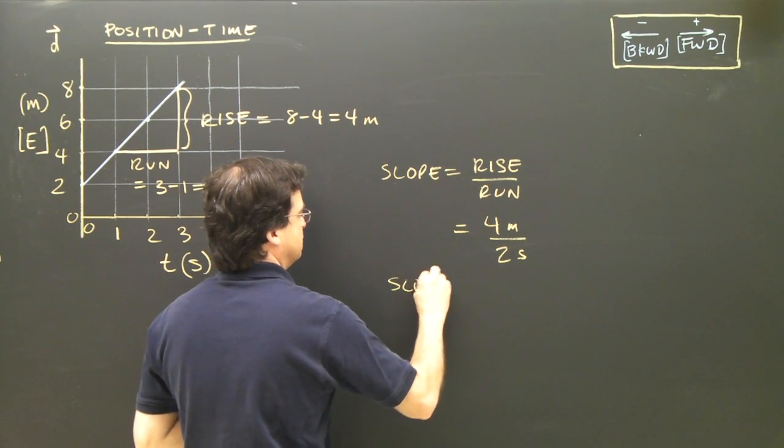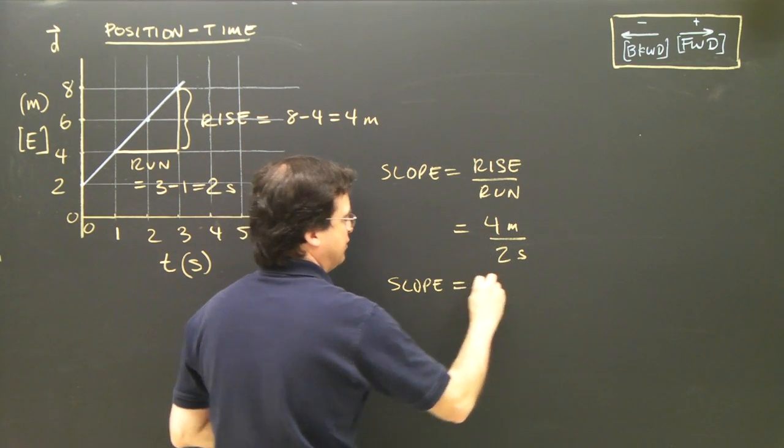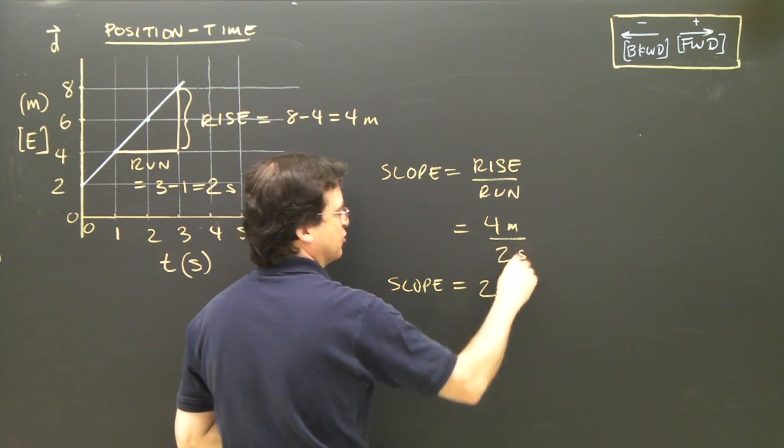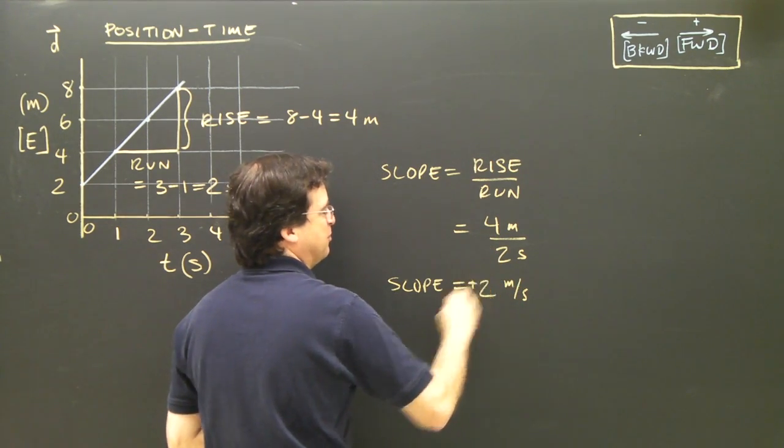So, my slope is equal to 4 divided by 2 is 2. My units are meters over seconds. Meters over seconds. And it's going to be positive.